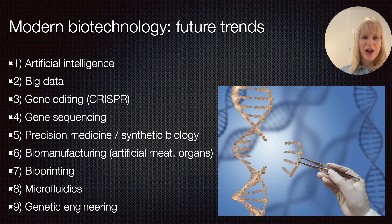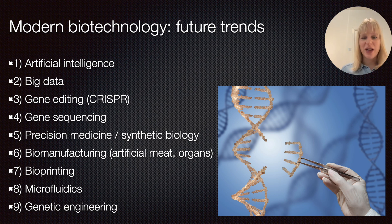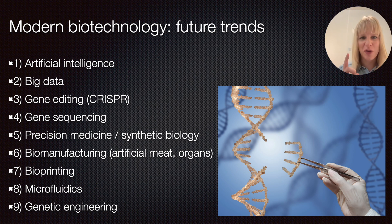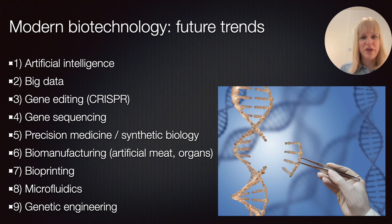In bio-manufacturing, we're looking at the potential shortage of food supply as the global population grows — I have a video on artificial meat. There's also growing interest in growing organs in the lab to address the shortage of donor organs, and bioprinting can be used to print such organs and other important structures. In microfluidics, we're working toward smaller and smaller diagnostic systems. A key cautionary example here is Theranos, which over-promised that a single drop of blood could diagnose many conditions. We are, however, developing better technologies for finger-prick diagnostics beyond glucose.